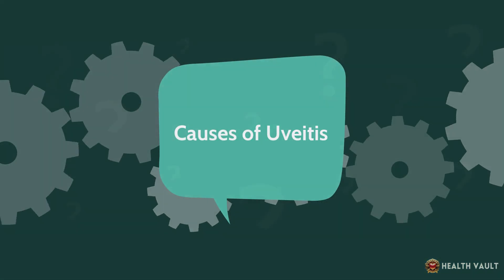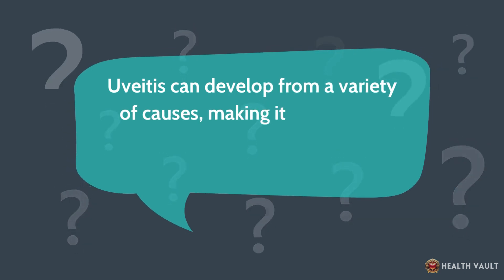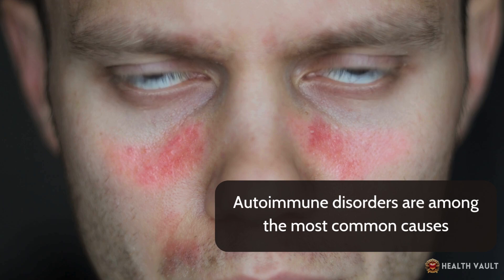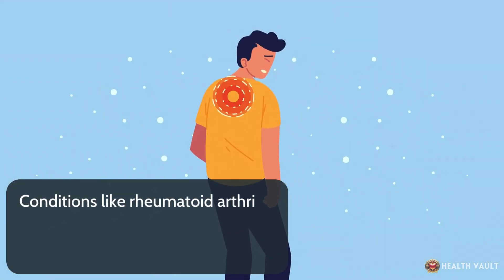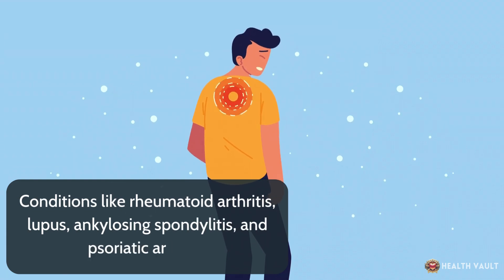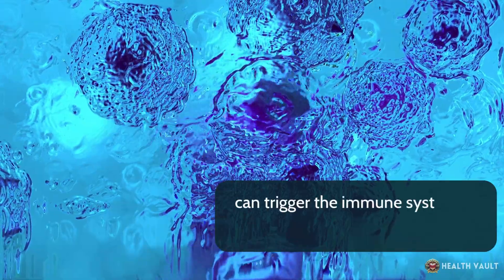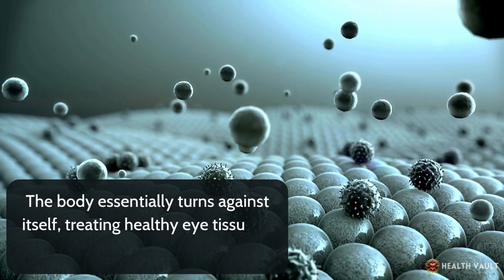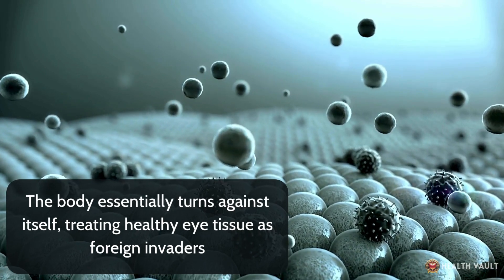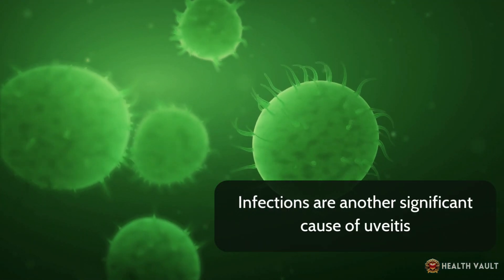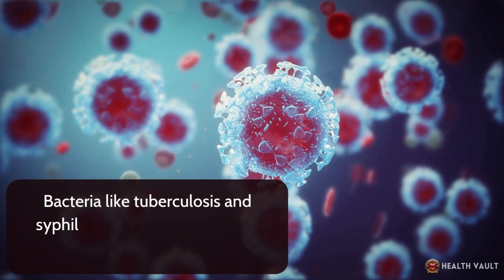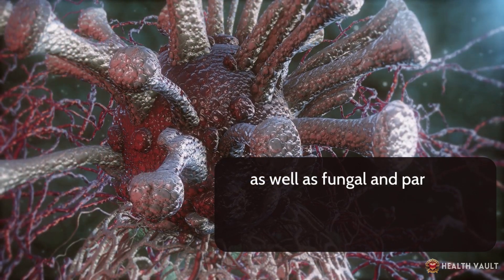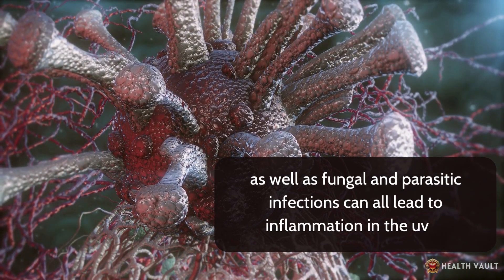Causes of uveitis. Uveitis can develop from a variety of causes, making it sometimes challenging to pinpoint the exact cause. Autoimmune disorders are among the most common causes. Conditions like rheumatoid arthritis, lupus, ankylosing spondylitis, and psoriatic arthritis can trigger the immune system to mistakenly attack the uvea — the body essentially turns against itself, treating healthy eye tissue as foreign invaders. Infections are another significant cause of uveitis. Bacteria like tuberculosis and syphilis, viruses such as herpes, cytomegalovirus, and HIV, as well as fungal and parasitic infections, can all lead to inflammation in the uvea.